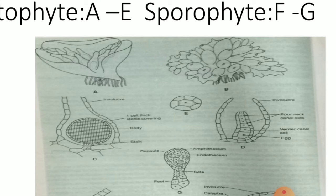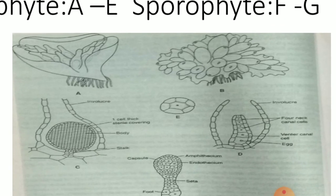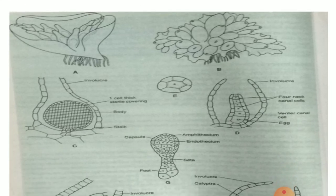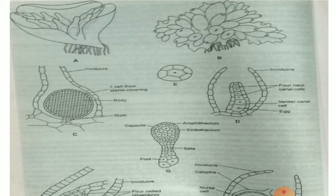In external morphology, Sphaerocarpos resembles both thallose forms, like Pellia, and leafy forms of the Marchantiales. Regarding internal anatomy of the thallus: figure A shows the thallose type and B shows the foliose type. The internal anatomy is also very simple. There is no division of labor — that is, no division into photosynthetic region and storage region. Photosynthetic chambers, photosynthetic filaments, and air pores are also absent, so the thallus of Sphaerocarpos is even simpler than the thallus of the genus Riccia.